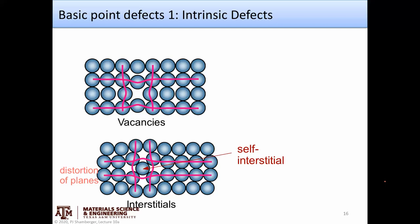Howdy. Today we're going to continue talking about point defects and we're going to work through some definitions. A lot of these you may have seen in your intro materials class before, but we want to touch on them again, and that's going to lead into the notation we use to describe point defects in systems — that's Kroger-Vink notation.